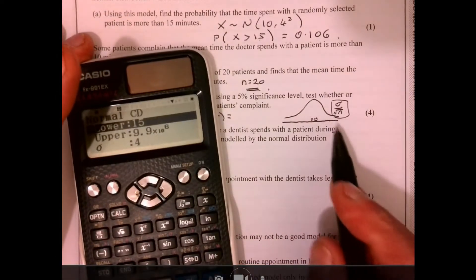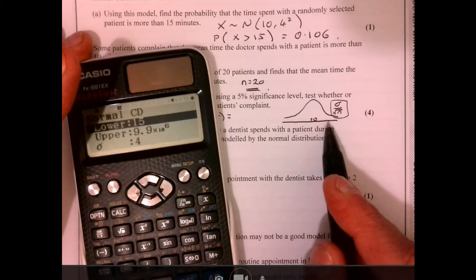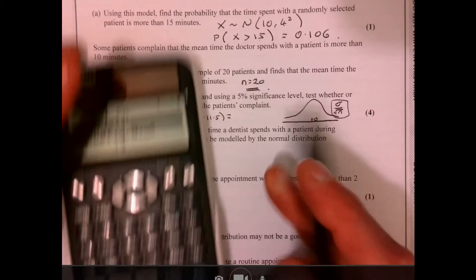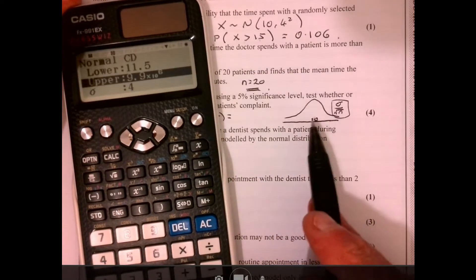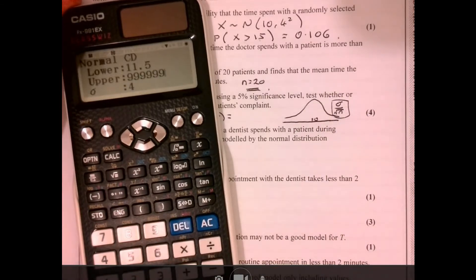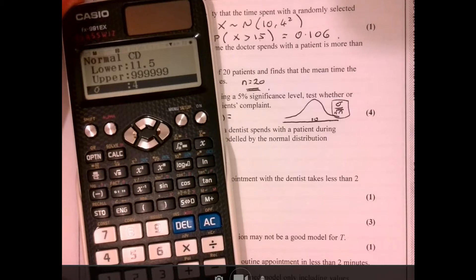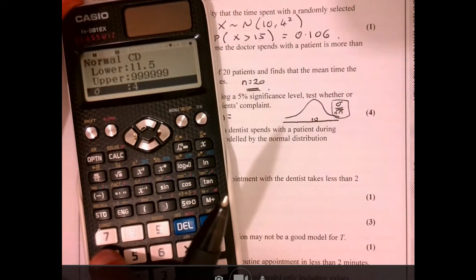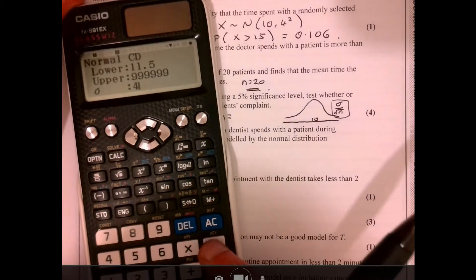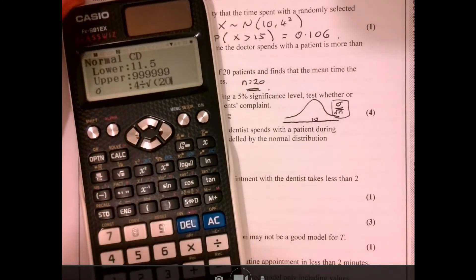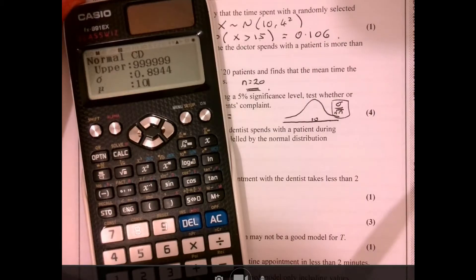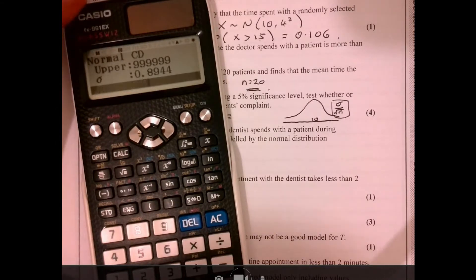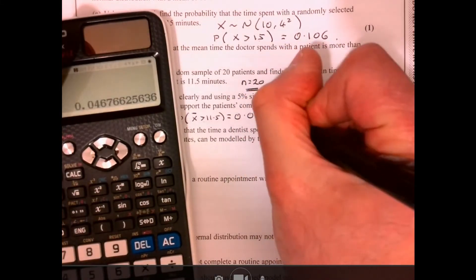So working with these, I've got my lower limit. I'm interested in it being more than 11.5. So I'm going to put 11.5 just there. Upper limit, just a really big number. I've got the standard deviation. The easy thing that I can do here is I can just write it out. It's 4 divided by root 20. And then we've still got our 10 there. And I press equals. My wonderful calculator will do all the work for me. And I've got an answer there of 0.0468.